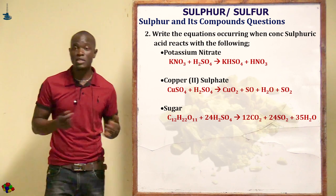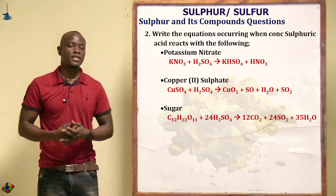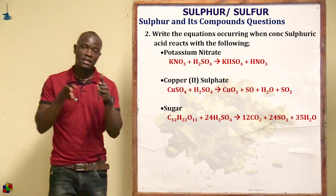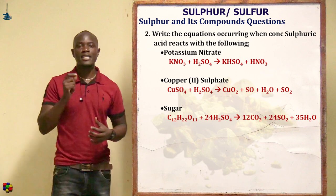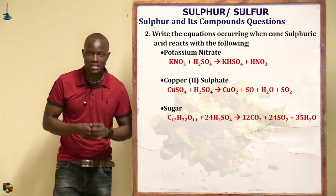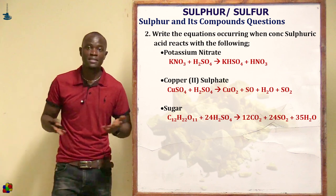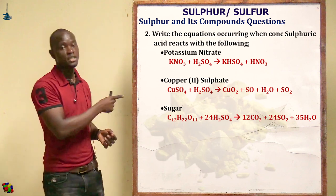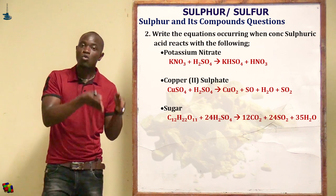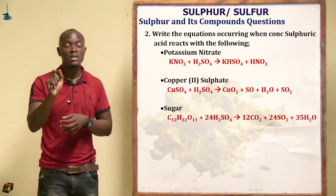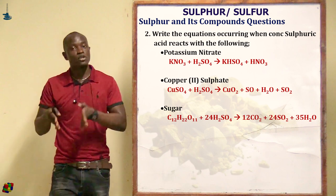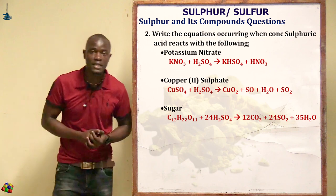The next question asks for equations when concentrated sulfuric acid reacts with various substances. Remember the chemical properties: concentrated and dilute sulfuric acid have different characteristics. When concentrated sulfuric acid reacts with potassium nitrate, you get potassium hydrogen sulfate plus nitric acid. You must obtain nitric acid when reacting a nitrate salt with concentrated sulfuric acid.